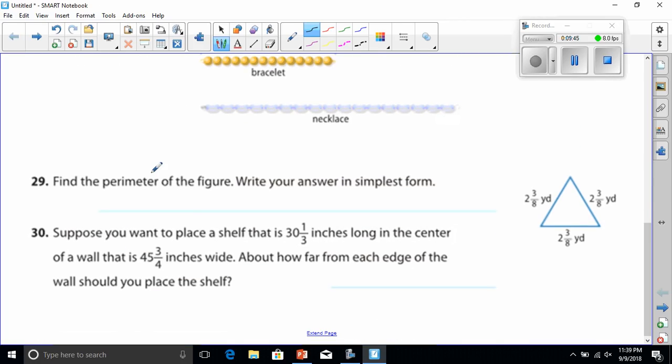Number 29. Find the perimeter of the figure. Write your answer in simplest form. The perimeter of the figure. First of all, the perimeter is the combined total of the outside. So if we want to know the perimeter of this figure, we have to add all the outsides together. We've got 2 and 3/8 plus 2 and 3/8 plus 2 and 3/8. So let's try that.